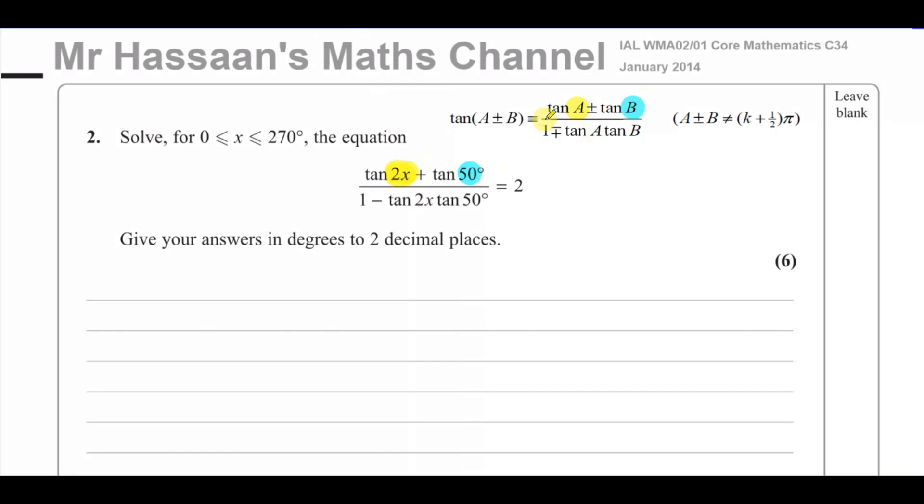Okay, so that's tan A plus tan 50. So it's like tan A plus tan B. And you have over 1 minus tan A times tan B. So the A is like the 2x and the 50 is like the B.